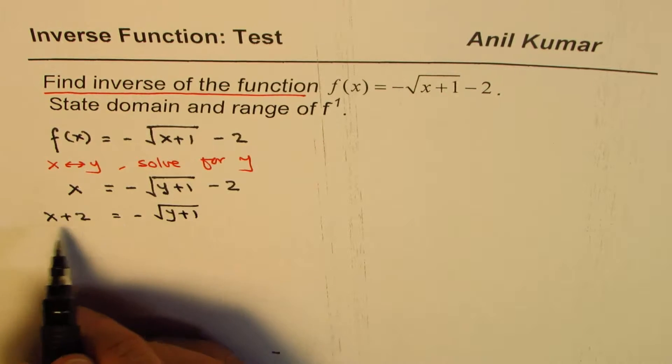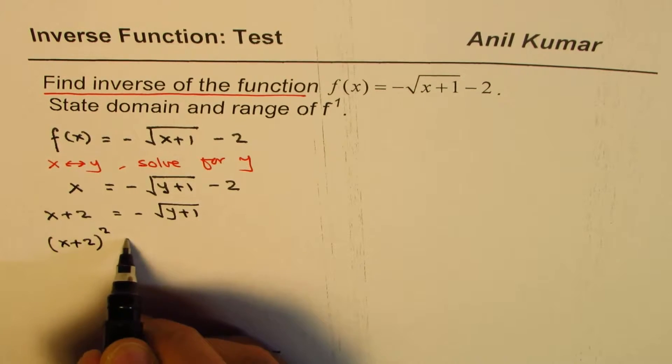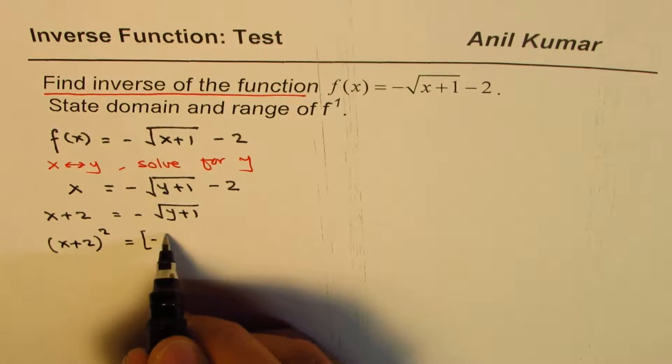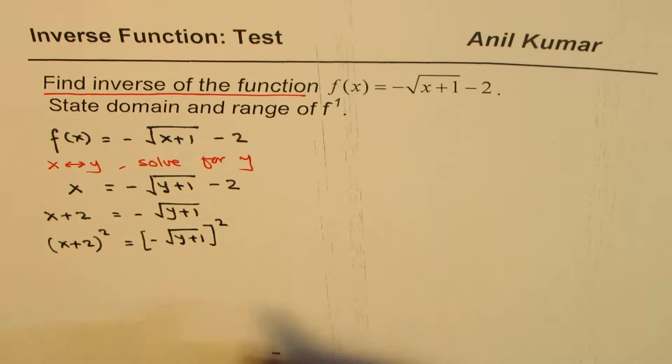And now at this stage, we'll square both sides. We get x plus 2 whole square. And when you square this side, you get minus y plus 1 square.